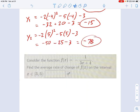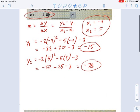Now we just have to take these numbers and put them into our equation for slope. So my slope, my average rate of change is y2 negative 78 minus y1 negative 15 divided by x2 5 minus x1 negative 4. So negative 78 minus negative 15 is going to be negative 63. And 5 minus negative 4 is 9. That looks like negative 7.